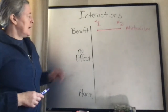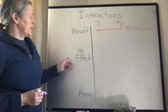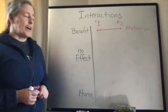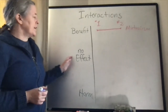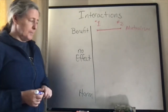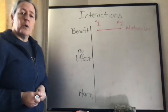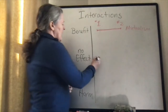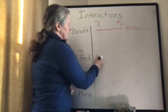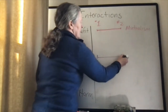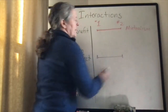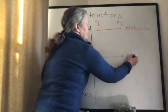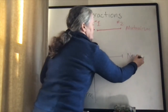Sometimes organisms might live in the same environment but don't really impact what happens with each other. There might be no effect on either one, and we usually call that neutralism.